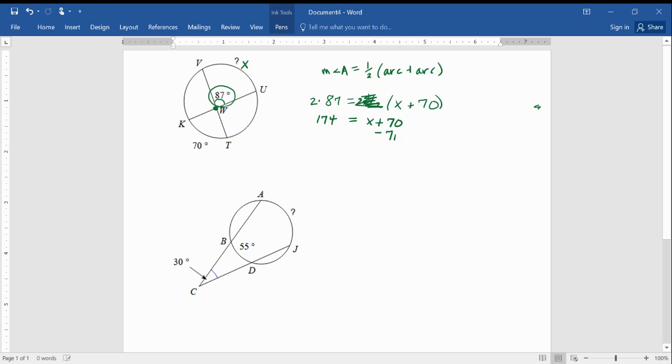Well, that really uncomplicated things, didn't it? Got rid of that fraction. Now, we don't have to worry about it. So, let's subtract that 70 and get 104 for X. So, that's your answer there.